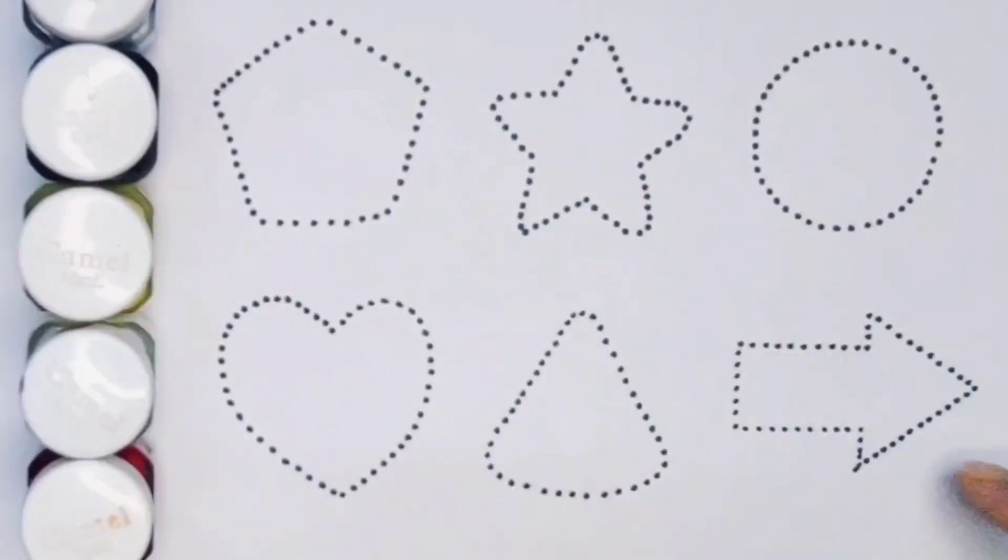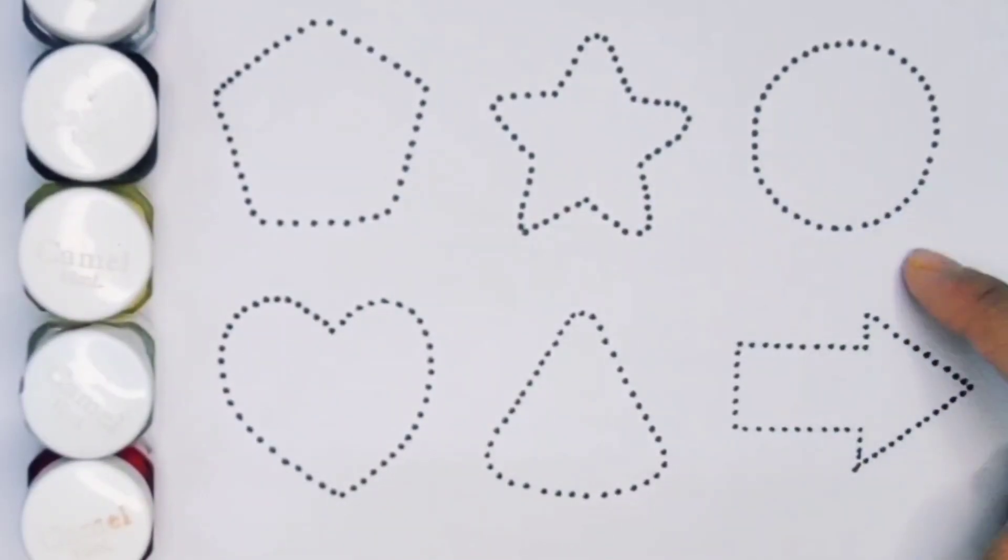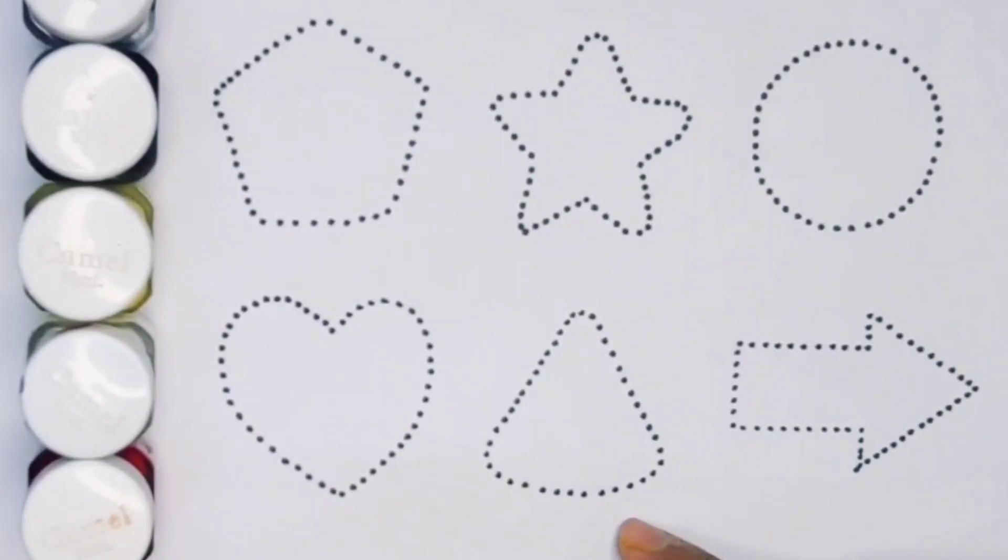Now, let's learn the 2D shapes: pentagon, star, circle, heart, triangle and arrow.